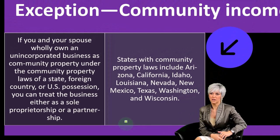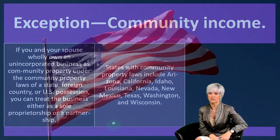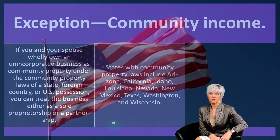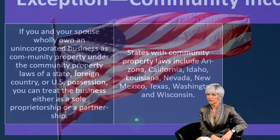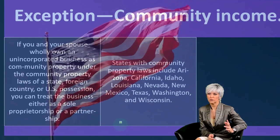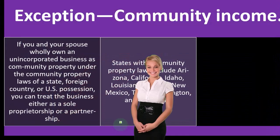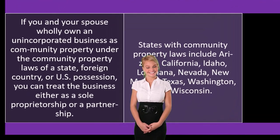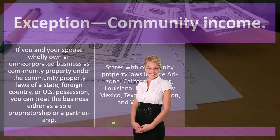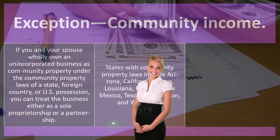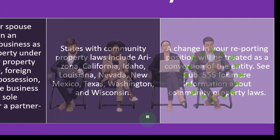States with community property laws include Arizona, California, Idaho, Louisiana, Nevada, New Mexico, Texas, Washington, and Wisconsin. You need to look at state law to determine what it means to be married from the state perspective — there's a differentiation between federal law and state law, and marriage contracts are typically under state law. In a community property state, spouses who own and operate a business may be able to use just a Schedule C. The main issue is properly allocating social security taxes to maximize the social security benefits for each spouse.